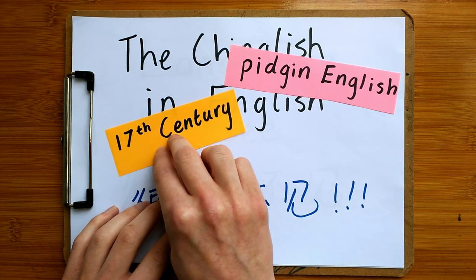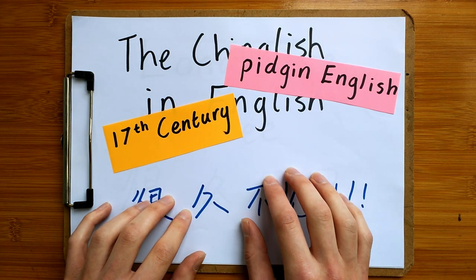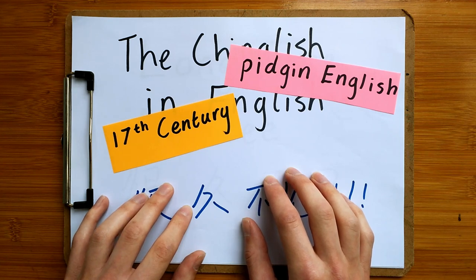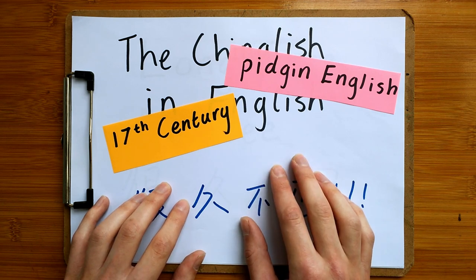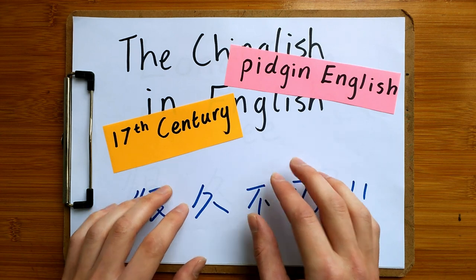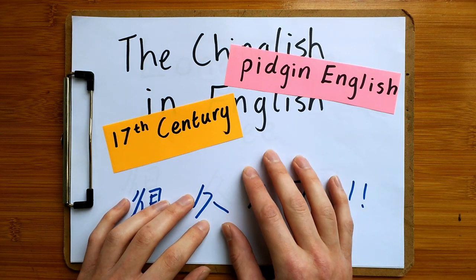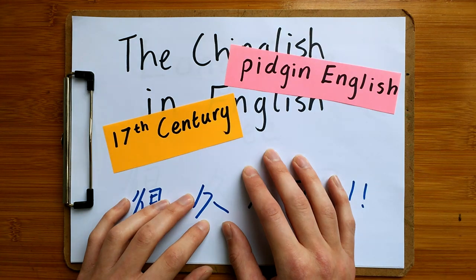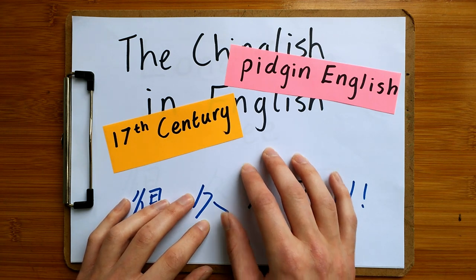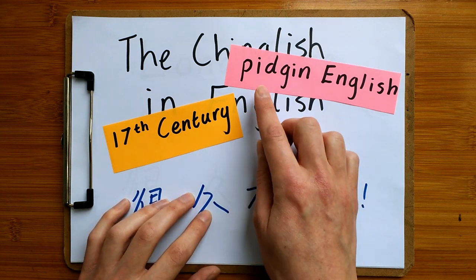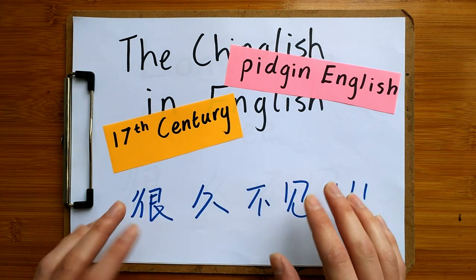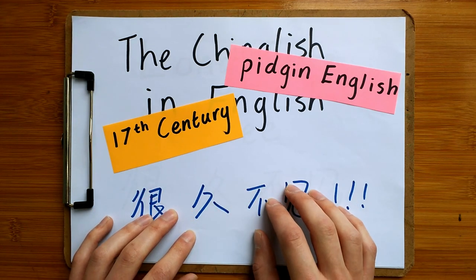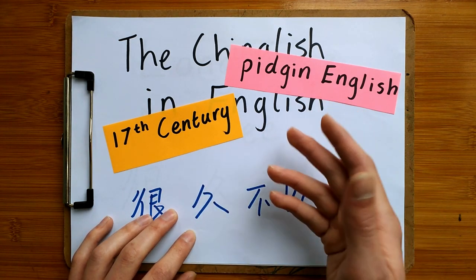Around the 17th century, people from Britain started to go to Hong Kong and Guangzhou and started to do trade with China. They needed a trade language to speak to the local businessmen and the local people to do their business. The local people didn't speak English, and the traders from Britain didn't speak Chinese. So eventually, during the 17th century, they made this thing called Pidgin English. And today I'm going to show you some examples of Pidgin English that have actually made it into the British English language.